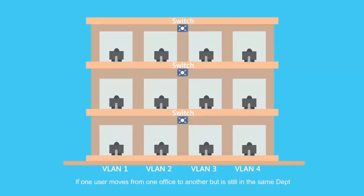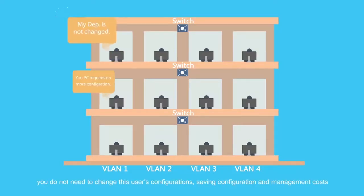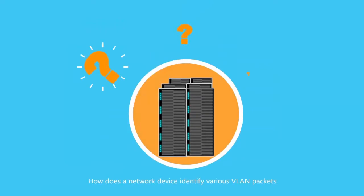If one user moves from one office to another but remains in the same department, you do not need to change that user's configurations, saving configuration and management costs. How does a network device identify various VLAN packets?